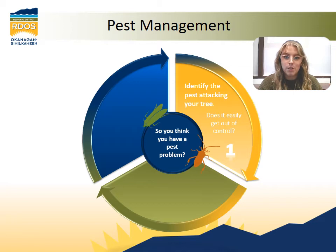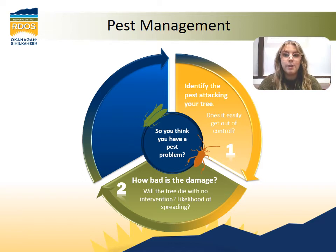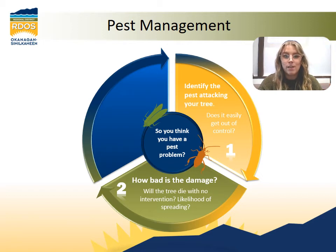Second, you must determine how severe the damage is. You must ask yourself if the tree will be severely affected and may die if immediate intervention is not done. You must also take into account the likelihood of spreading and how invasive it is. For example, the apple maggot should be something that's frequently looked for, even though the Okanagan Similkameen is free of this pest, as it's known to decimate crops in areas close by and must be reported immediately. Thirdly, you must determine what your plan of action is. If you decide that intervention is necessary, always use the least toxic control method possible. Using chemical intervention is typically not necessary for residential plantings and can sometimes do more harm than good by removing the beneficial insects that are keeping the pest in check.